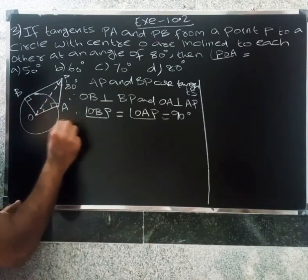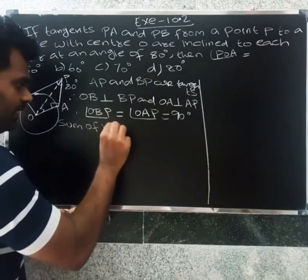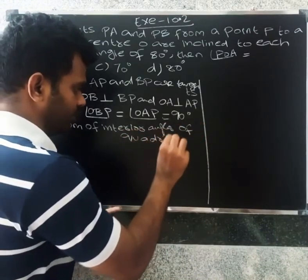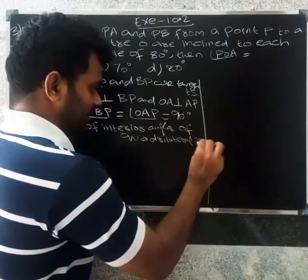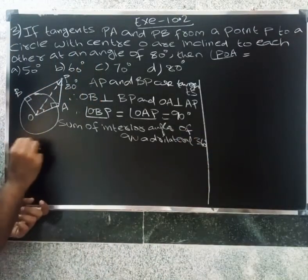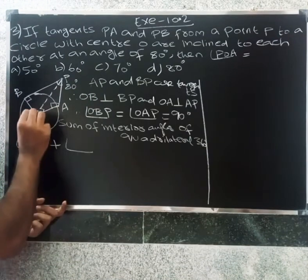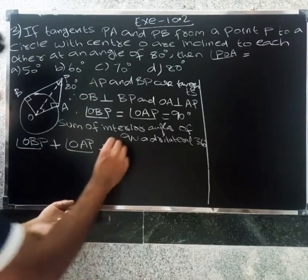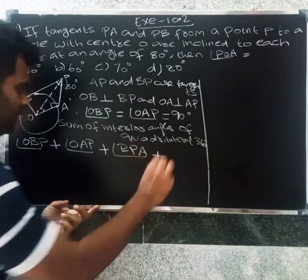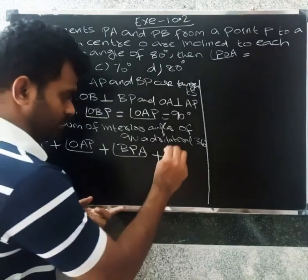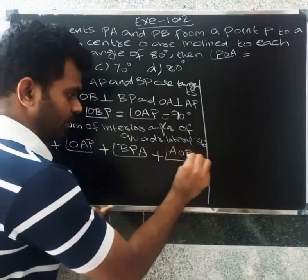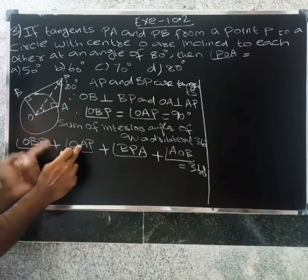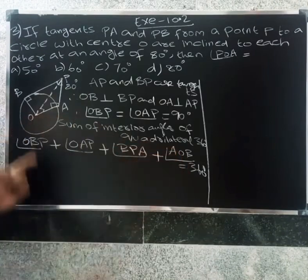Now, the interior angles of a quadrilateral equal 360 degrees. So angle OBP plus angle OAP plus angle BPA plus angle AOB equal to 360 degrees. Check all four angles at the points O, B, P, and A.